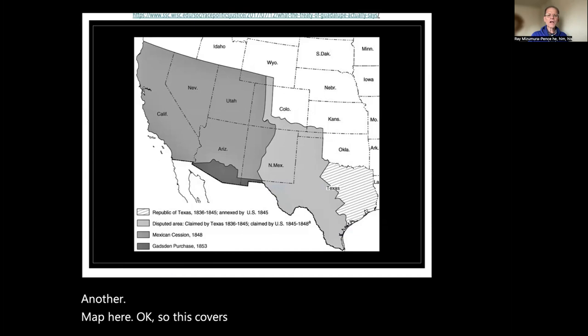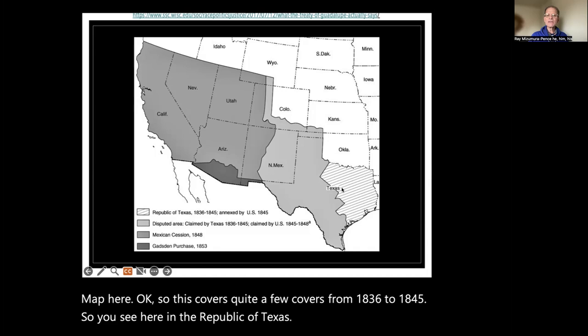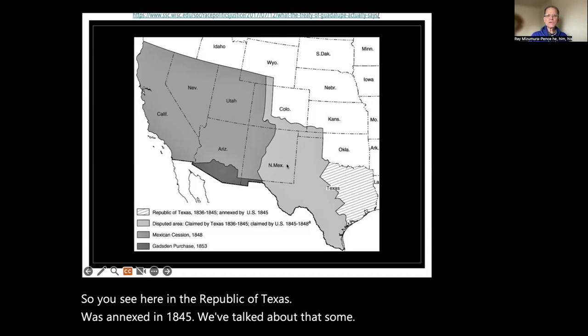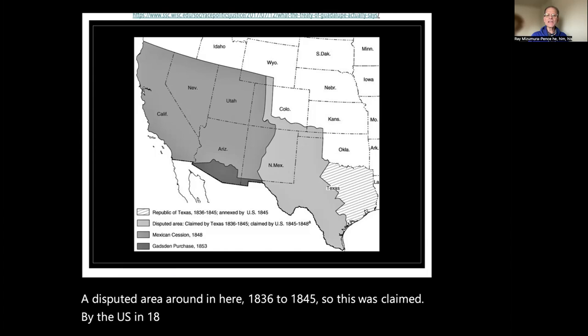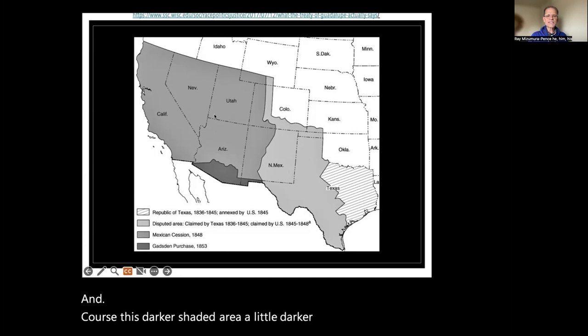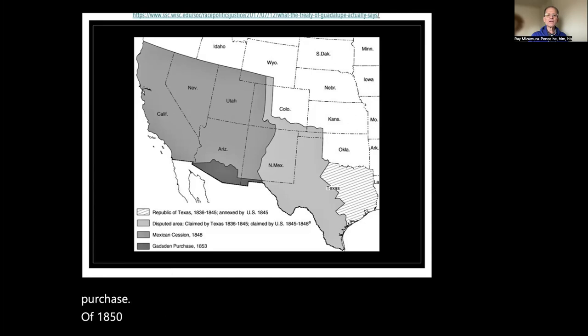This map covers 1836 to 1845. You see the Republic of Texas, which was annexed in 1845. There is a disputed area from 1836 to 1845, which was claimed by the U.S. from 1845 to 1848 and eventually obtained. The darker shaded area is the Mexican Cession of 1848. Down here, the narrowest and darkest area is the Gadsden Purchase of 1853 — the lower part of Arizona and some of what is now New Mexico.